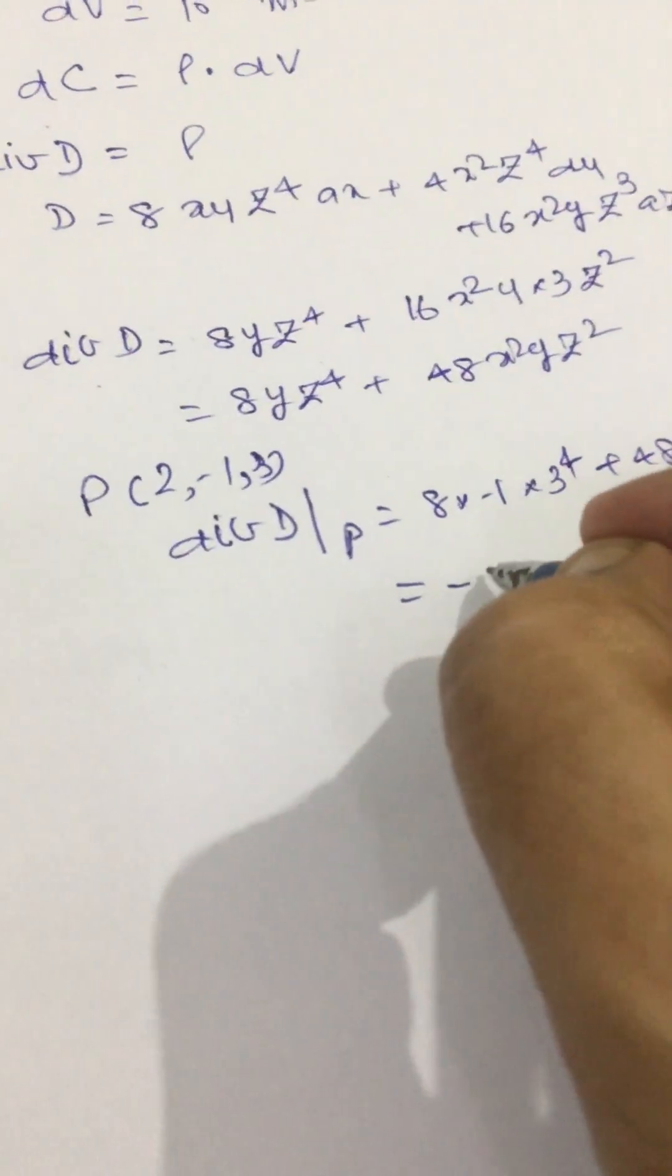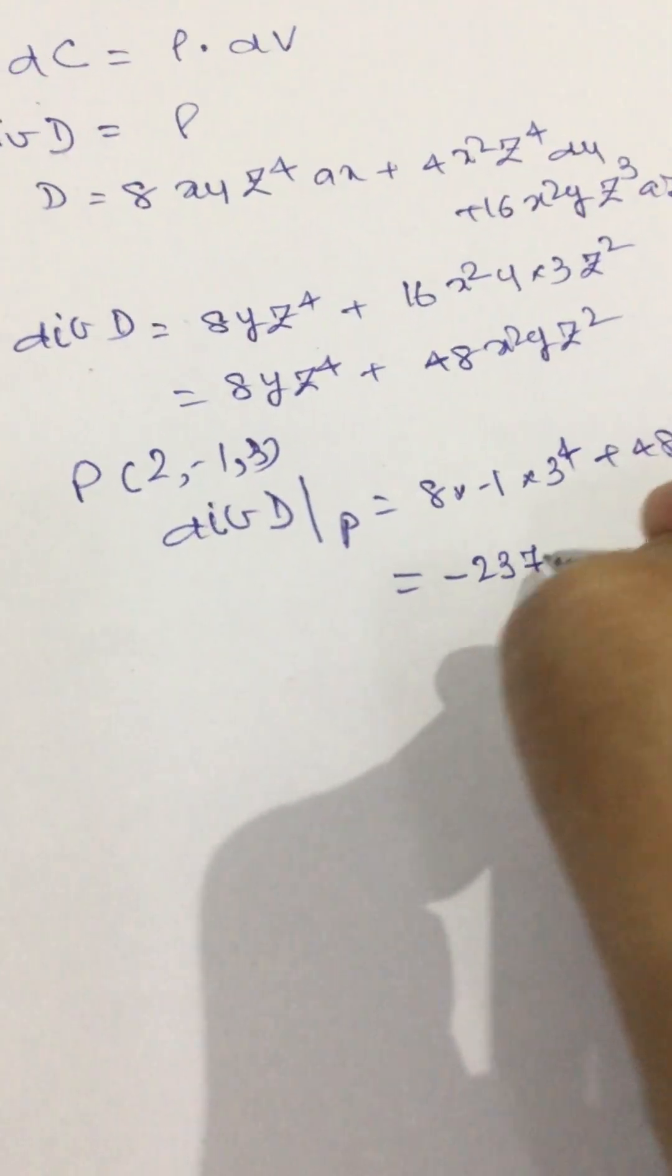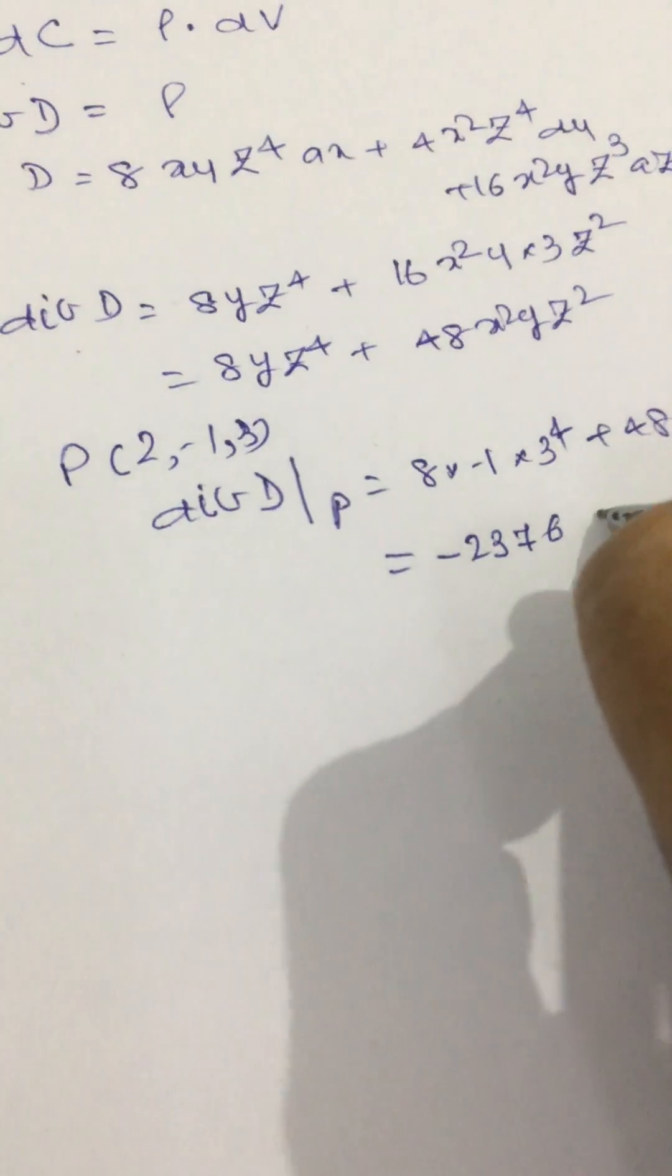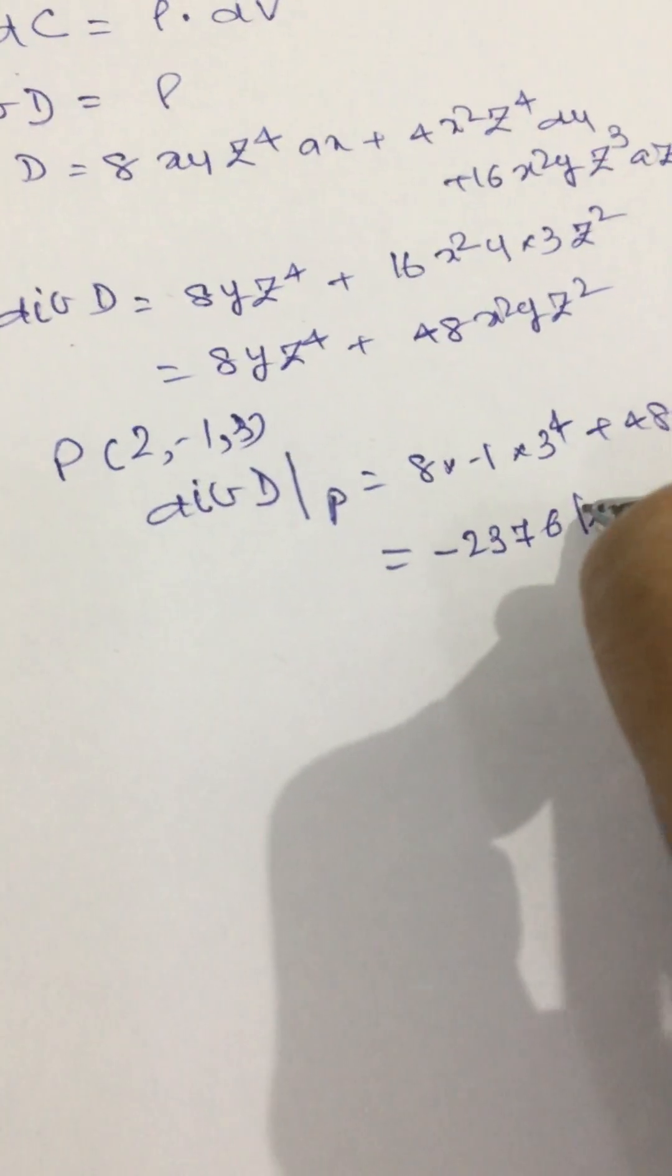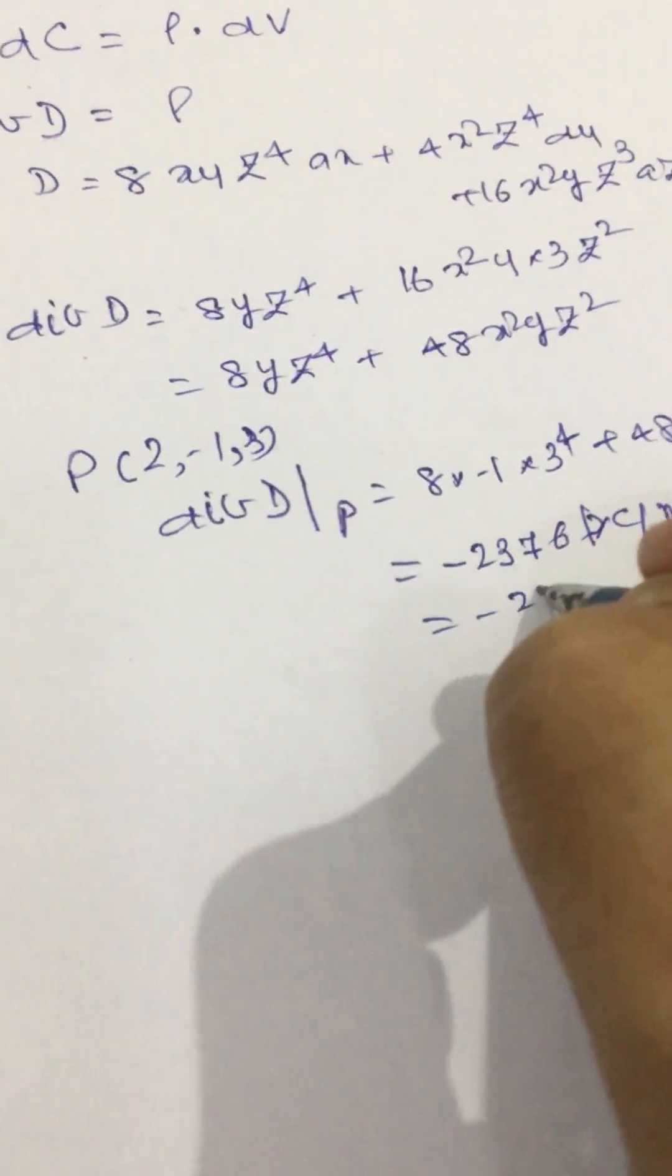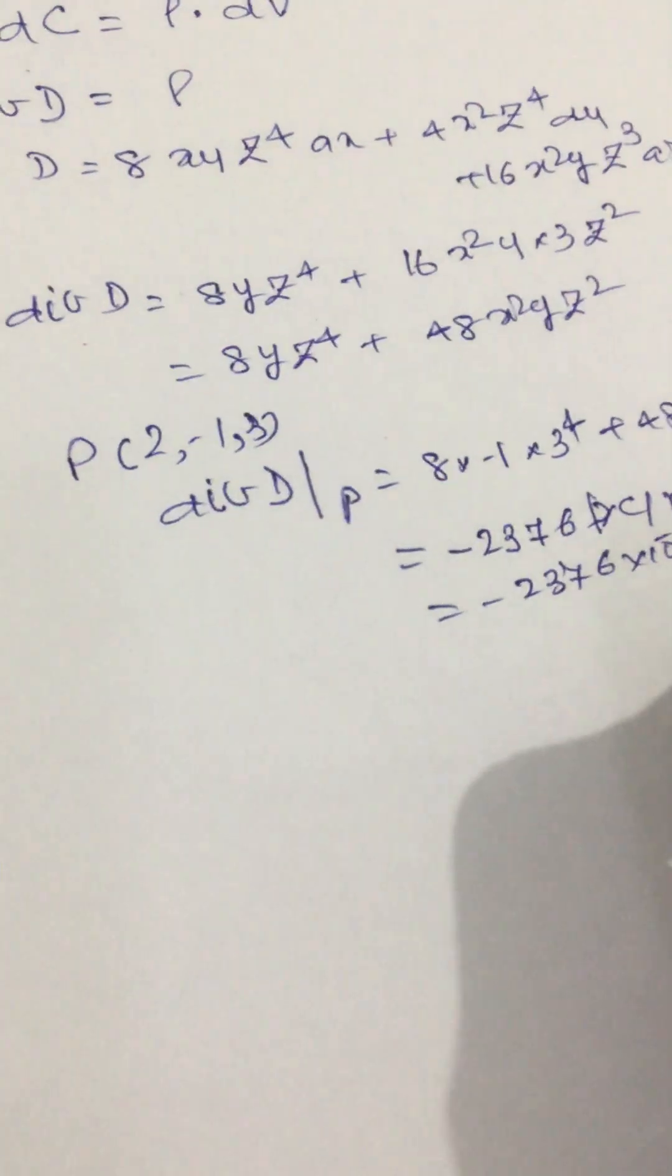This becomes -2376 picocoulomb per meter cube. This is equal to -2376 into 10 to the power -12 coulomb per meter cube.